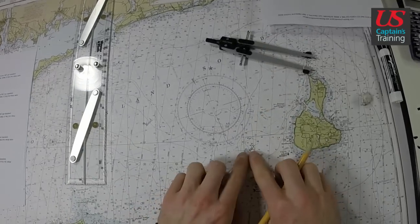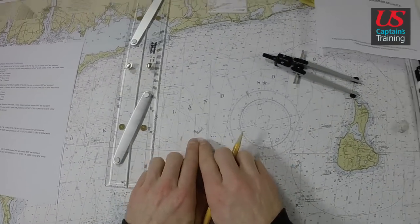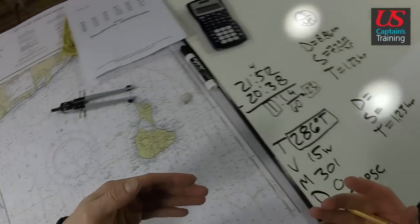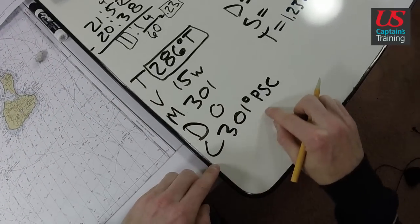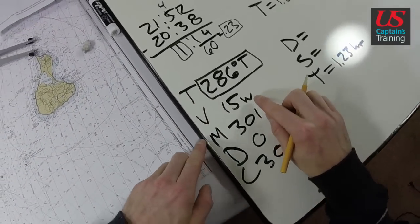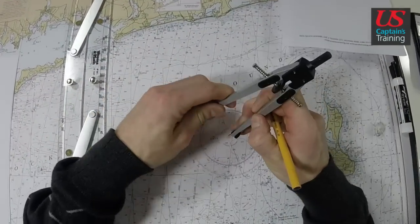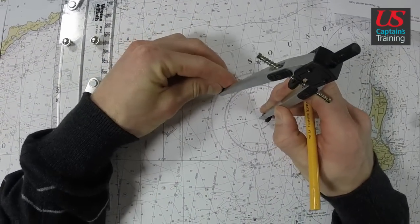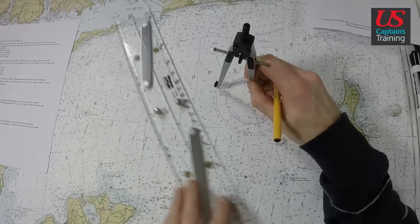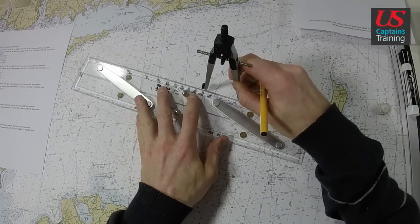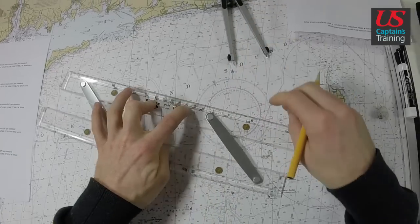So now. Start. End. Now we need to plot our course. We've done our math. We're on 301 PSC, 286 PSC. So from the start, we go toward 286. 285, 286. Bump the parallel rules up. Bring them down.